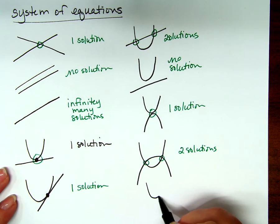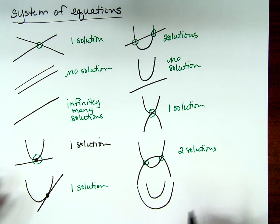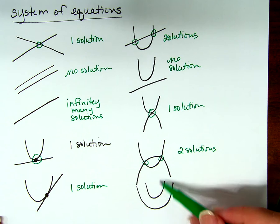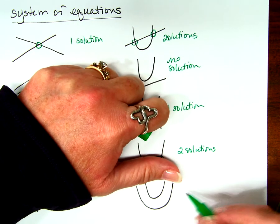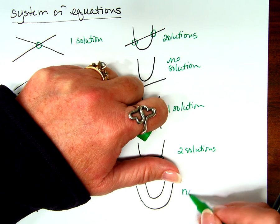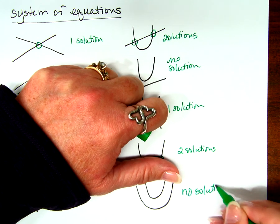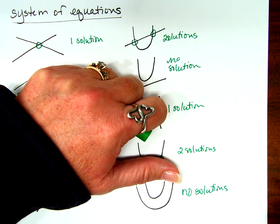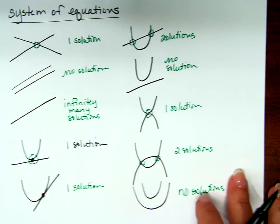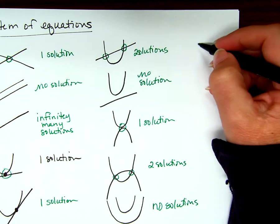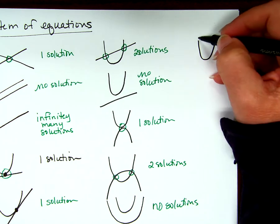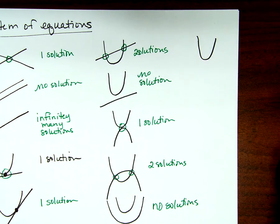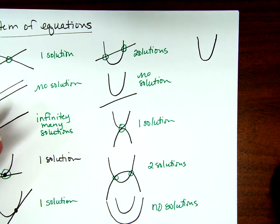What if one parabola is inside the other like that? No solutions. Now I heard this mentioned — a vertical parabola and a horizontal parabola, right? We've talked about horizontal parabolas — it's not what we normally go to because normally we're talking about functional parabolas.